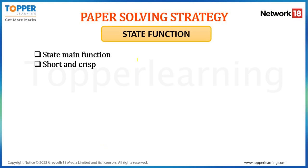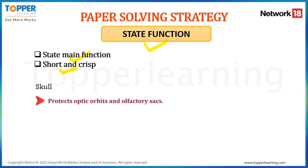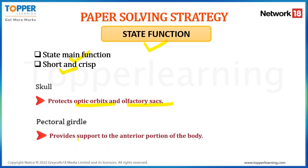Let's move to another typology of question which is 'state the function.' Here you are expected to write the main function of the structure, organ, or term which is given. Be very specific and write as short and crisp as possible. For example, state the function of the skull: it protects the optic orbits and the olfactory sac. This is a one-liner expected of you to write — it's a one marker question. Another example: state the function of the pectoral girdle. The pectoral girdle provides support to the anterior portion of the body.